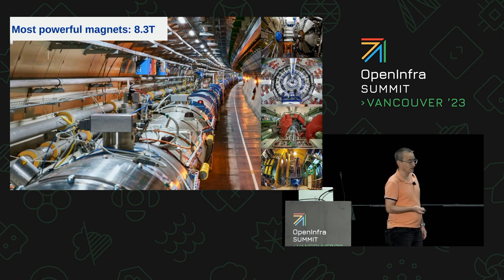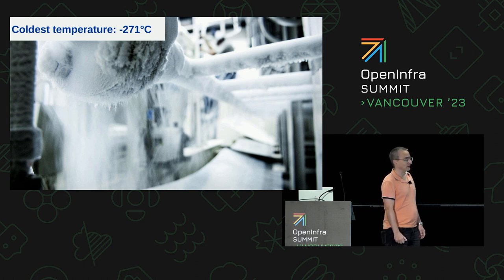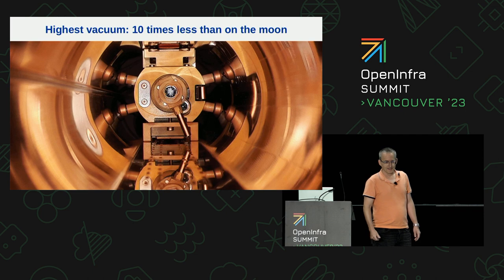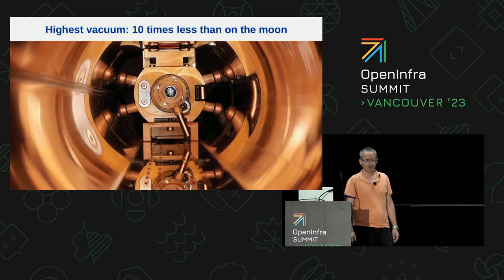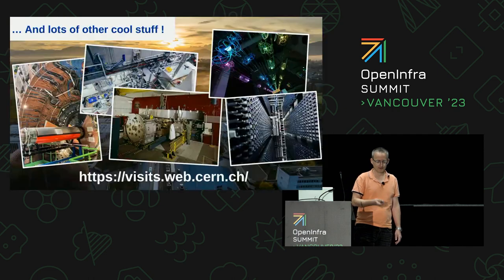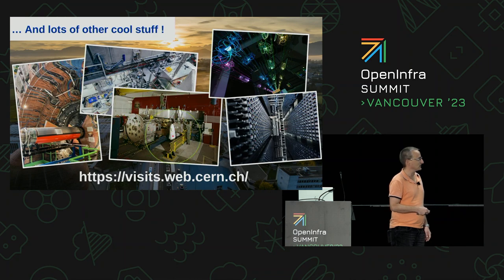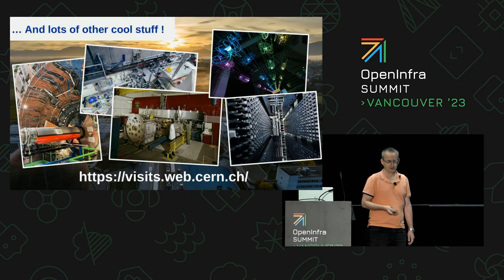The LHC runs the most powerful magnets on earth at 8.3 Tesla. In order to achieve that, they have to be cooled down to two Kelvins — to compare, you have three Kelvins in interstellar space. All around the 27 kilometers are the magnets. We also don't want to collide with air, so we need a very high vacuum, which is actually 10 times less particles than you can find on the moon. Apart from that, if you visit CERN, you can see things like the first accelerator that existed at CERN, which you can visit now, an anti-matter factory, the computer center, and an old detector you can visit if you go down to LHCb.